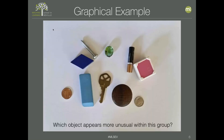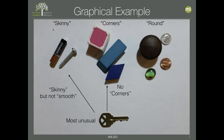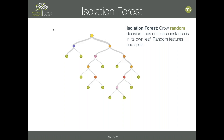For a graphical example: given a group of objects, which one is most unusual? Looking at shape features, the key would be the most unusual — it's not as skinny as the other two, it has corners, and it's not round. So it's really different from all the others and could be an example of an anomaly.